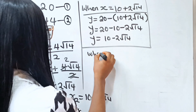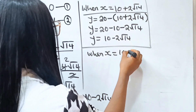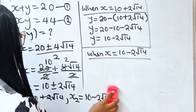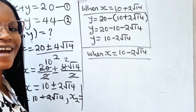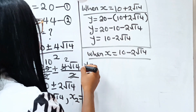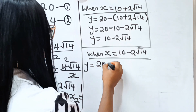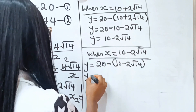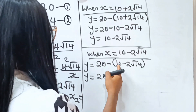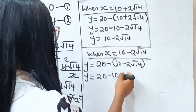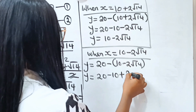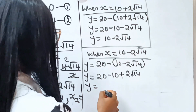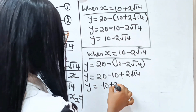When x is equal to 10 minus 2 root 14, then y will be 20 minus (10 minus 2 root 14). So y equals 20 minus 10, and minus times minus is plus, so y equals 10 plus 2 root 14.